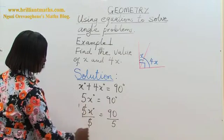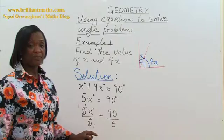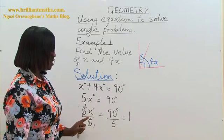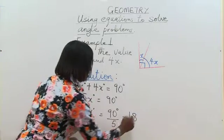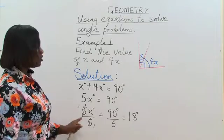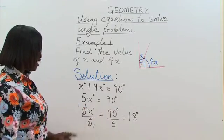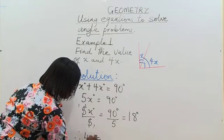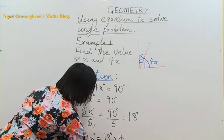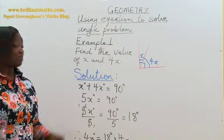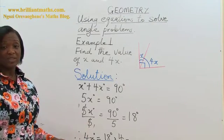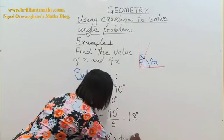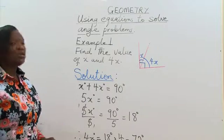5 will cancel 5 to give us 1. And then how many 5s do we have in 90? 5 in 90. 5 in 9 is 1 with 4 left. 5 in 40 is 8. And that is 18 degrees. So we are saying that x is equal to 18 degrees. If x is equal to 18 degrees, therefore, 4x is equal to 18 degrees times 4. Multiplying by 4, simple mental strategy is doubling twice. So we can simply double 18 to give us 36. And you double 36 to give you 72 degrees. So 4x is equal to 72 degrees.